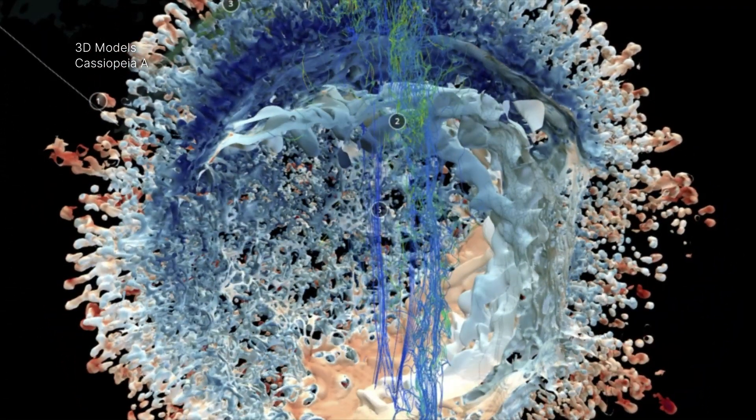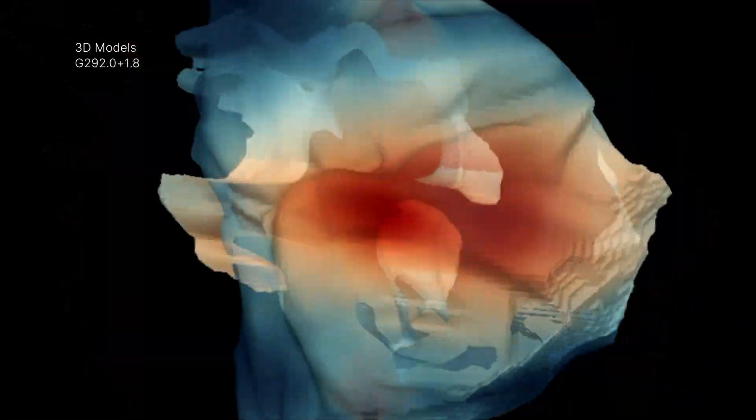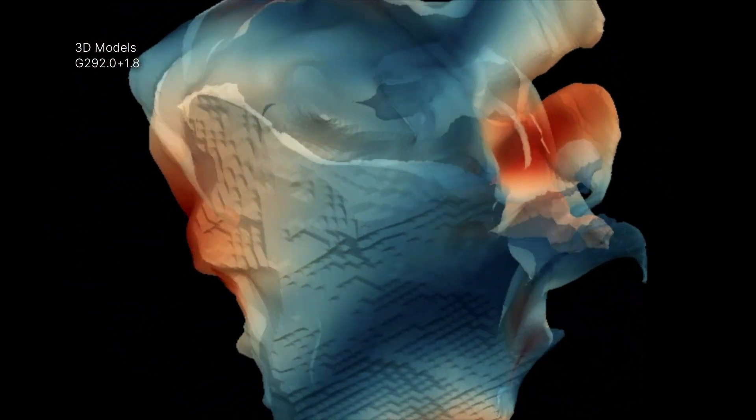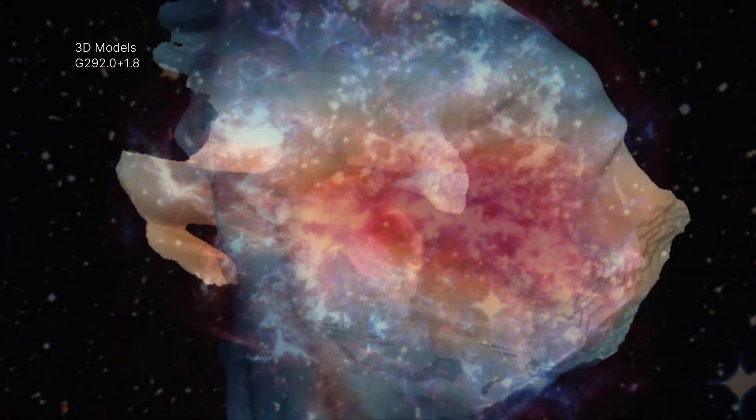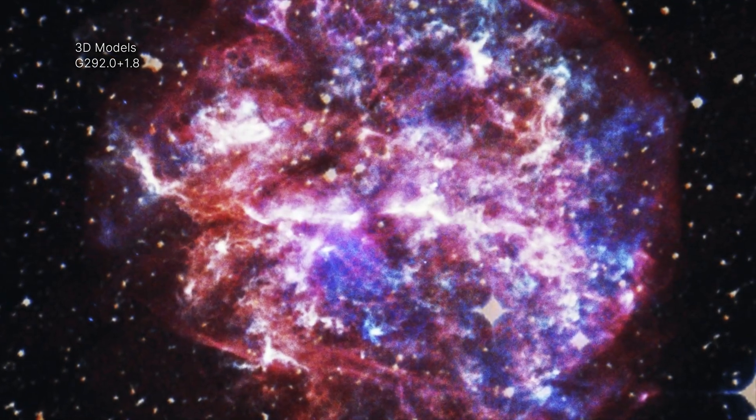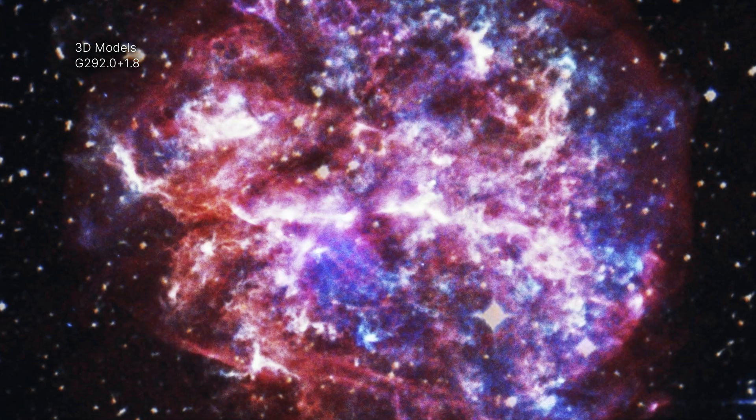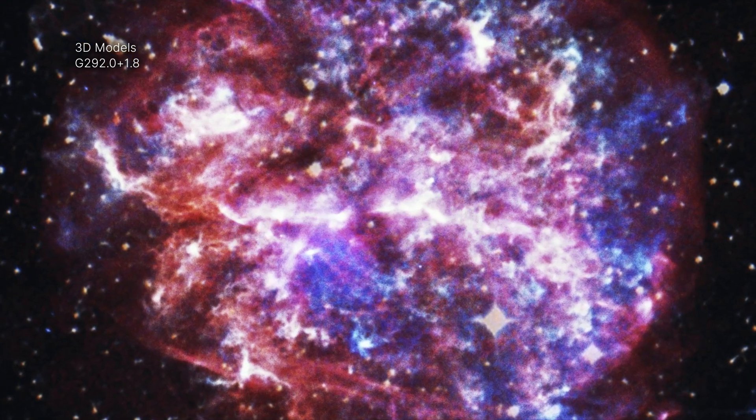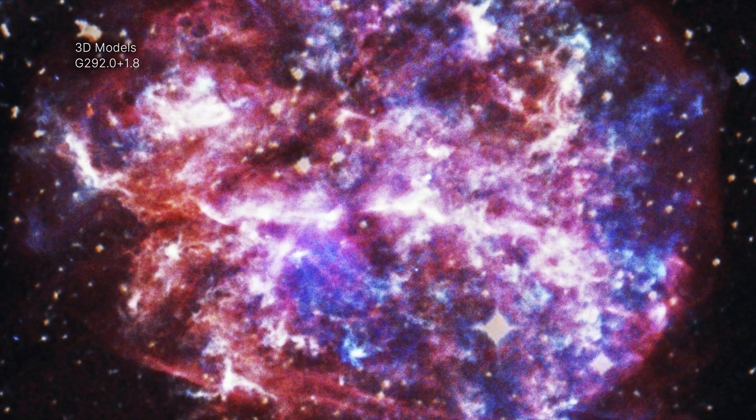By creating a 3D model of the G292 system, astronomers have been able to examine the asymmetrical shape of the remnant that can be explained by a reverse shockwave moving back toward the original explosion. This helps them better understand this rare type of supernova explosion that contains large amounts of oxygen.